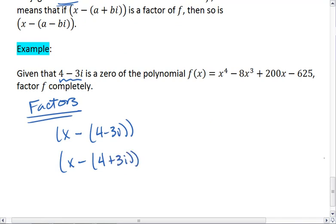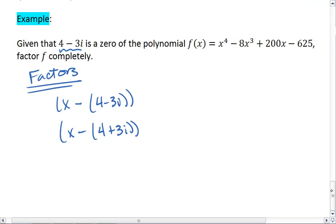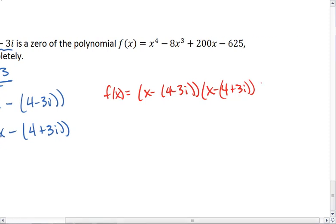If these are both factors, then we know we're going to have x minus 4 minus 3i. Let's change the color here. So f of x will be equal to x minus 4 minus 3i times x minus 4 plus 3i times something else in order to get it equal to this x to the fourth.